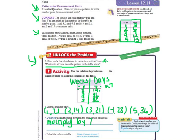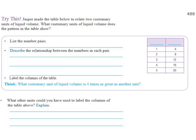We're going to flip it over and do page 488. We're just going to do the try this. Jasper made the table below to relate two customary units of liquid volume. So we know if we're looking at our conversion chart, it's going to be something we're going to have to label something that's on the liquid volume list. What customary, so that even narrows it down for us more, customary units of liquid volume does the pattern in the table show?